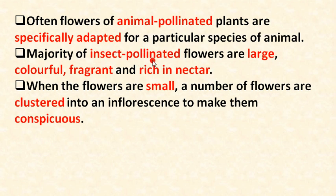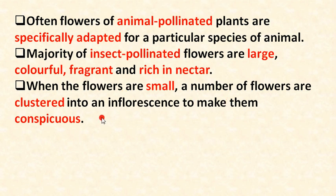Insect-pollinated flowers are attractive in nature — they attract insects with their color, fragrance (pleasant smell), and nectar, which is edible for these animals. When flowers are small, a number of flowers are clustered together into an inflorescence to make them conspicuous and attract animals.